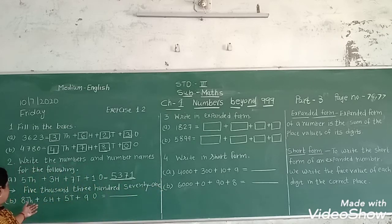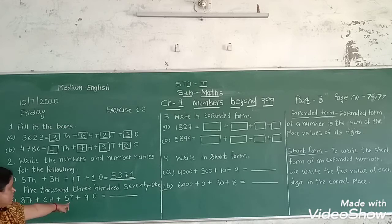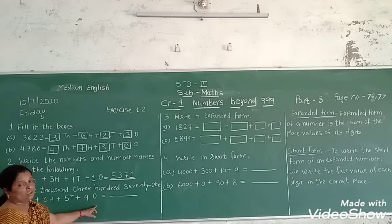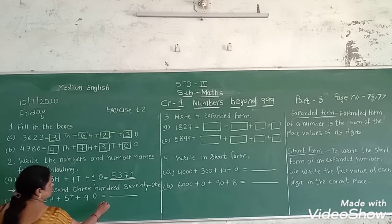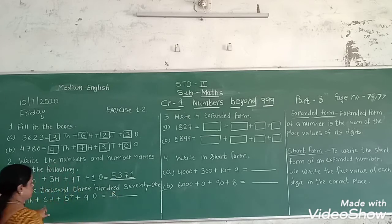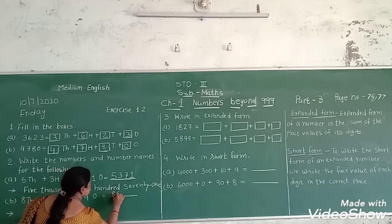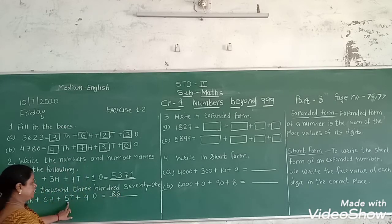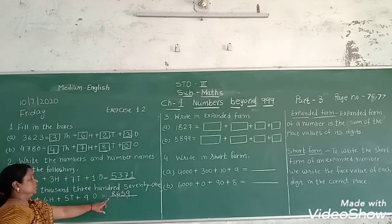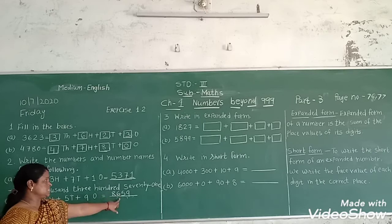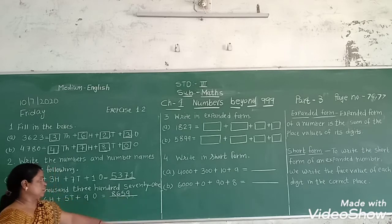Next sum is eight thousand, six hundred, five tens and nine ones. First we write the number. The thousands place is eight, so we write eight. Six hundred — the hundreds place we write six. And five tens — we write five. And nine ones. The number is eight thousand, six hundred, fifty-nine.